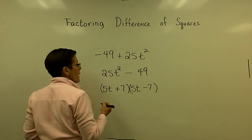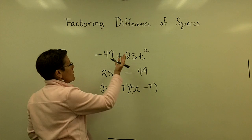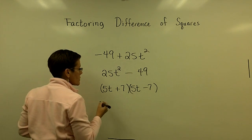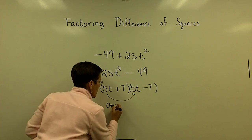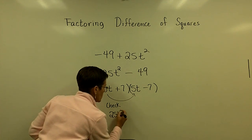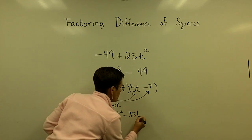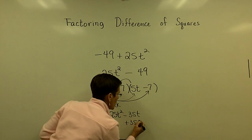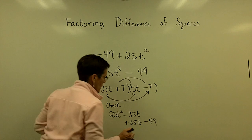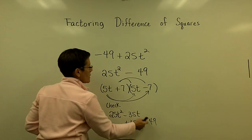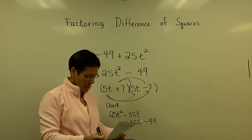This difference of squares factors into those two binomials. If you'd like to check, multiply it out: you get 25t squared, then minus 35t and positive 35t which cancel to nothing, and 7 times minus 7 gives minus 49. That gives 25t squared minus 49, which is what we started with.